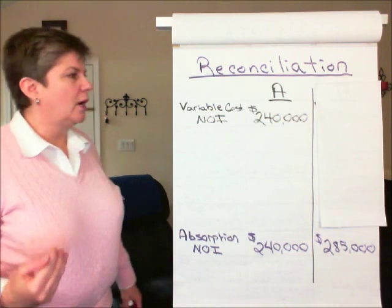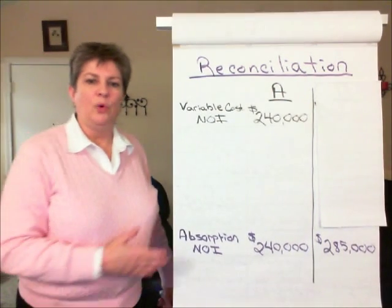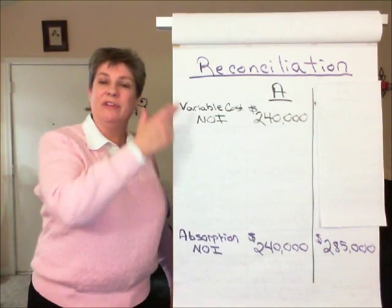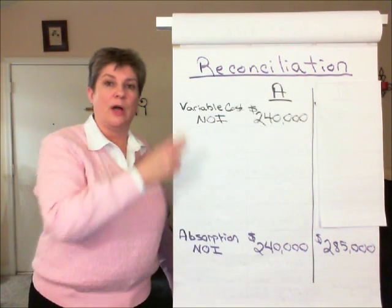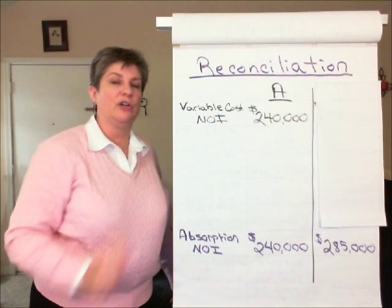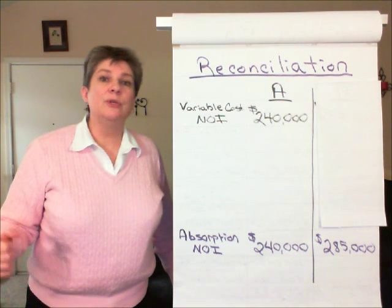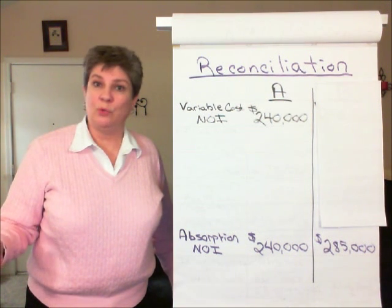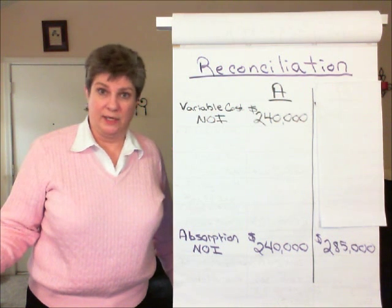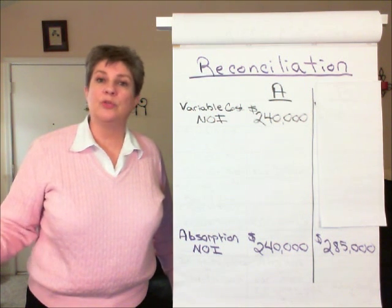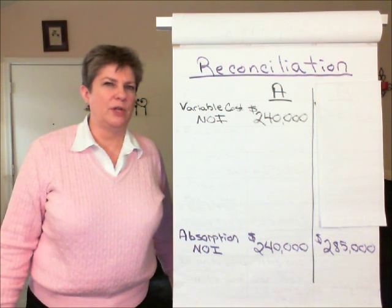Recall Scenario A — we didn't have a difference in absorption costing and variable costing net income because production was equal to sales. The number of units produced was the same as the number of units sold.